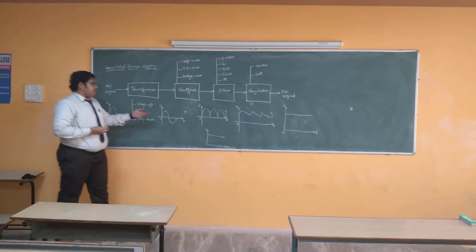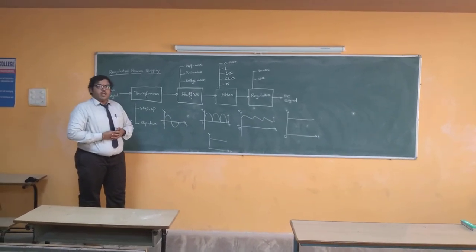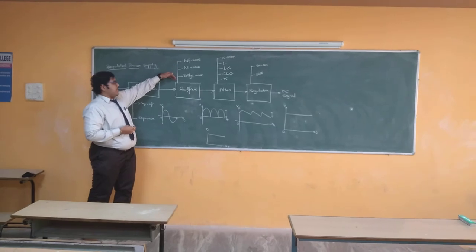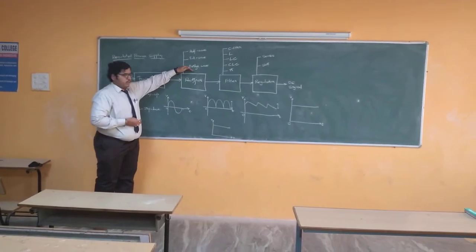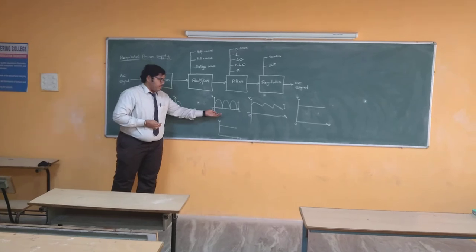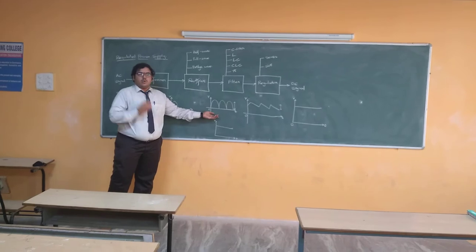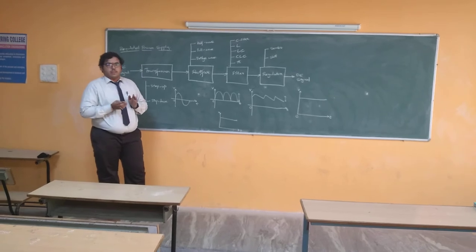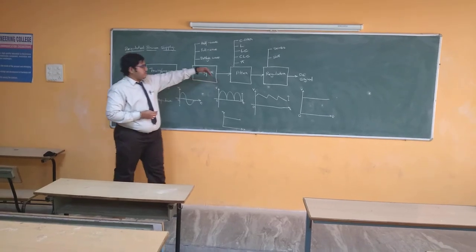After decreasing the voltage level, it is given to a rectifier block, where the rectifier is a device which converts the AC signal into a pulsating DC. Again, we have three classifications: half-wave rectifier circuit, full-wave rectifier circuit, and bridge-wave rectifier circuit. Using these classifications, the AC signal is converted into a pulsating DC but with very high ripples — that is the only disadvantage of the rectifier circuit, which eliminates one portion of the signal but does not fully reduce the ripples.